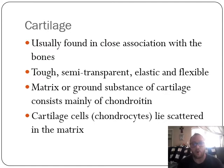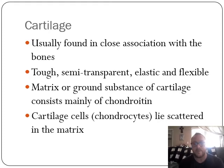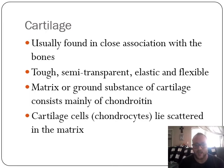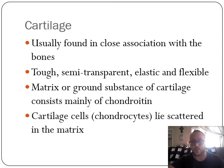The matrix or ground substance of cartilage consists mainly of chondroitin. Chondroitin is the matrix of cartilage. The living cells that produce chondroitin are called chondrocytes. The word 'chondro' means 'of cartilage' - so chondrocytes literally translates to cartilage cells. The chondrocytes produce the chondroitin which makes up the cartilage. The chondrocytes lie scattered in the matrix, which can be quite dangerous - if you have random cells floating in a semi-solid, they can get damaged.